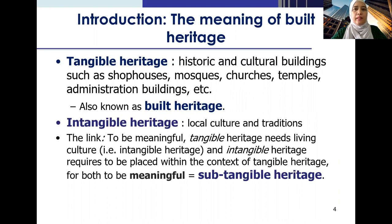The meaning of built heritage: we can divide heritage into two categories. One is tangible heritage, and the next is intangible heritage. Tangible heritage is something we can touch, something expressed and manifest — something real. Tangible heritage includes historic and cultural buildings such as shop houses, mosques, churches, temples, and admin buildings. These are also known as built heritage.